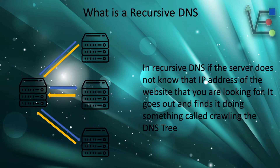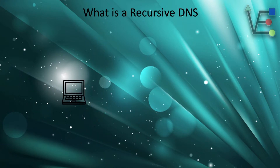In a recursive DNS setup, if the server does not know the IP address of the website it is looking for, it goes out and finds it by doing something called crawling the DNS tree. Your computer sends out a DNS request to the recursive DNS server.